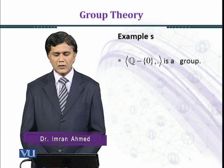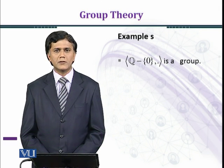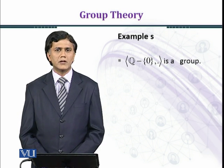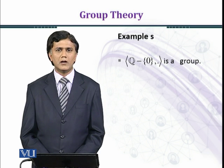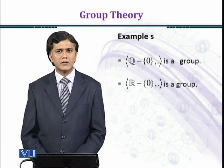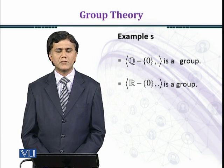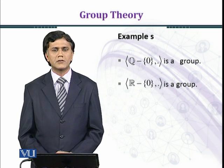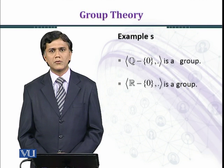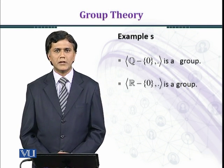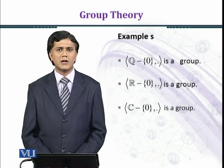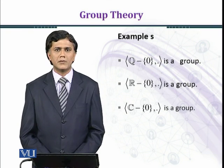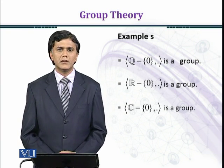Now you might think: what do we need to do to make it a group? If we remove zero from the rational numbers, it will form a group. All the axioms, as seen in the previous slides, will be satisfied, and you will find the multiplicative inverse under multiplication. The only problem was that zero had no multiplicative inverse. Similarly, if we exclude zero from the real numbers, they form a group under multiplication. Non-zero real numbers satisfy all the required properties. In the same way, non-zero complex numbers also form a group under multiplication, as we have already studied those properties.